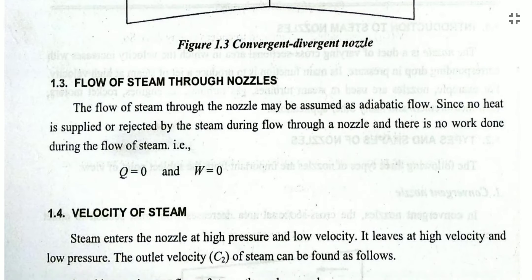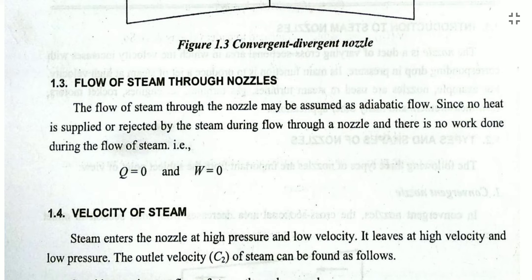Regarding the flow of steam through nozzles: steam flow through a nozzle is generally assumed to be adiabatic, meaning no heat loss occurs — heat transfer Q is equal to zero. Insulating materials surround the nozzle to prevent heat flow from the system to the surroundings. Work done is also zero; only velocity change happens in the nozzle.